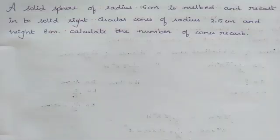A solid sphere of radius 15 cm is melted and recast into solid right circular cones of radius 2.5 cm and height 8 cm. Calculate the number of cones recast. So this is the question.